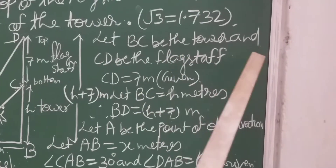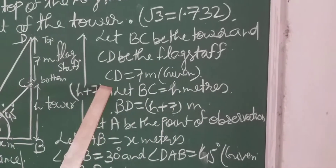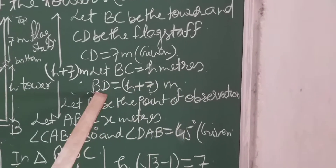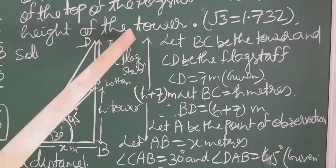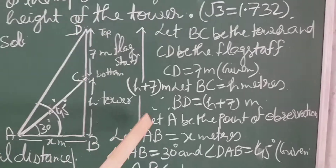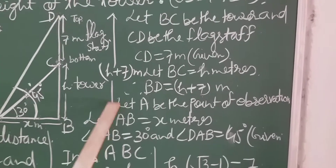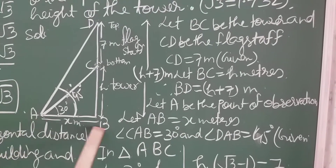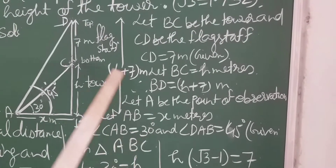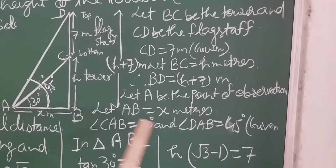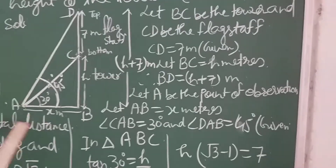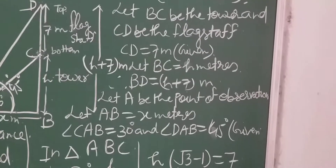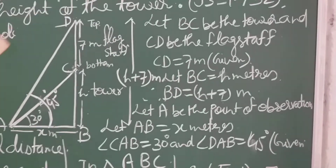Let BC be the tower and CD be the flagstaff. CD equals 7 meter given. Let BC equals h meter, so BD equals h plus 7 meter — the whole height. Let A be the point of observation and AB equals x meter. Angle CAB equals 30 degree and angle DAB equals 45 degree. All the information is mentioned in the diagram.